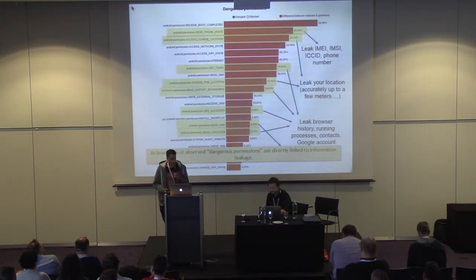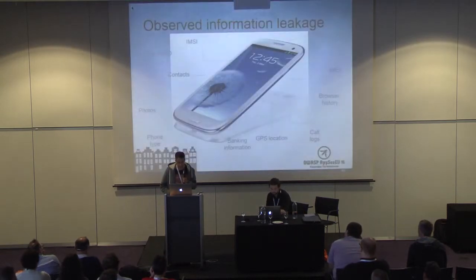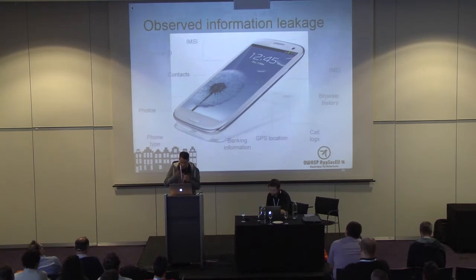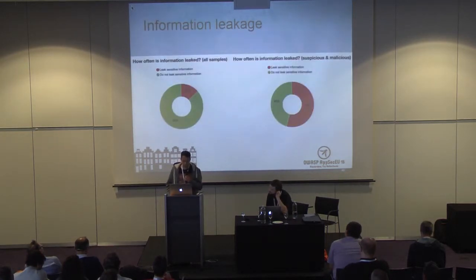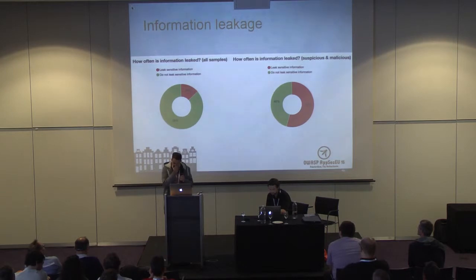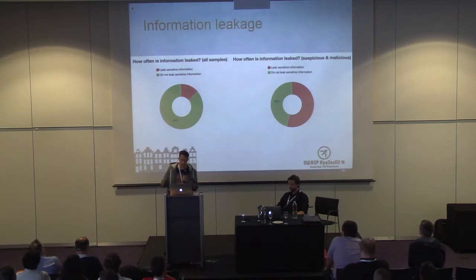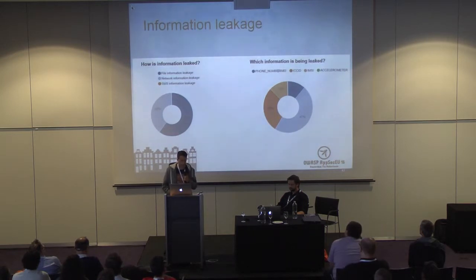This is quite scary because it's difficult to categorize an app as malicious based on device information leakage alone — it could just be an app registering a device ID legitimately. These end up in the suspicious bucket, and quite often also bypass the Google Bouncer. Overall, we see information leakage in about 14% of all samples across APK Scan's 50,000 apps. If we look only at suspicious and malicious categories, more than half of them leak device-identifying information sufficient to uniquely identify a phone on the planet.